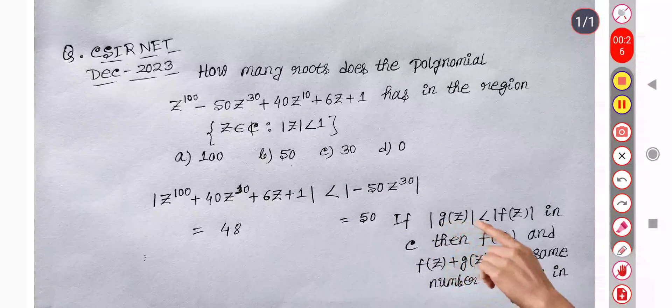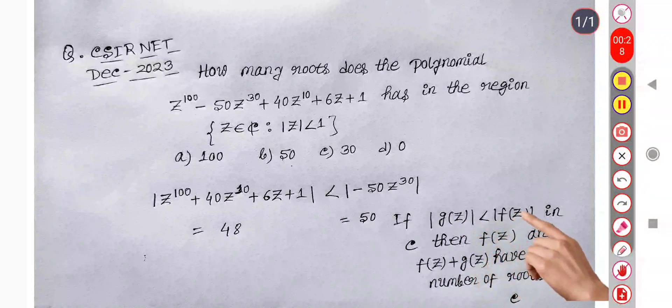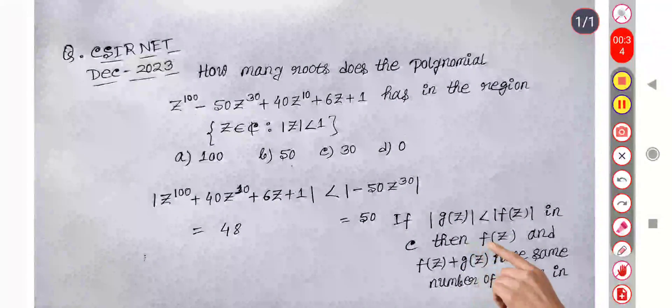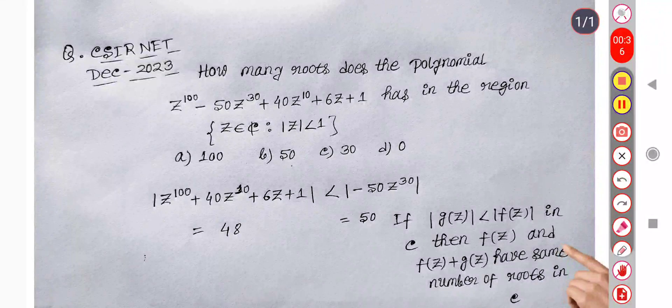If mod g(z) is less than mod f(z) in the region C, then f(z) and f(z) plus g(z) have the same number of roots in C.